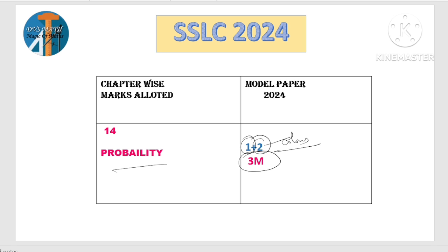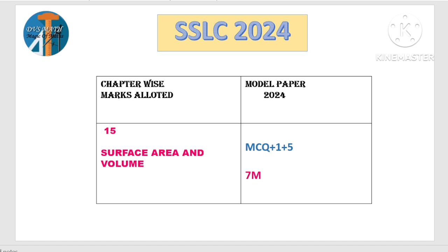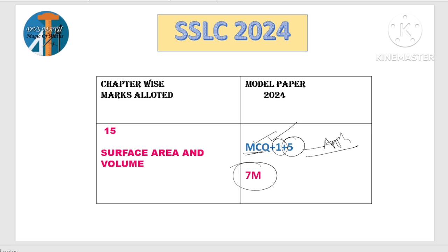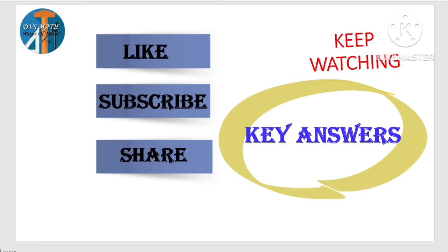Last lesson — surface area and volume: same pattern. MCQ formula based — 1 mark, ಮತ್ತು 5 marks application based question. So total weightage is 7 marks for surface area and volume. Chapter wise marks ಮಾಡಿ ರೊನ್ನ — hope everyone gets clarity.